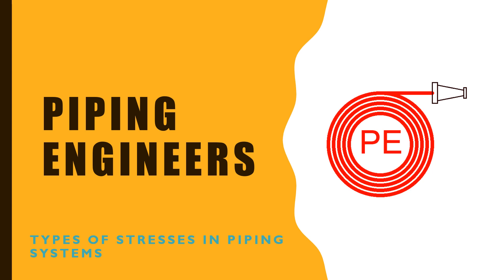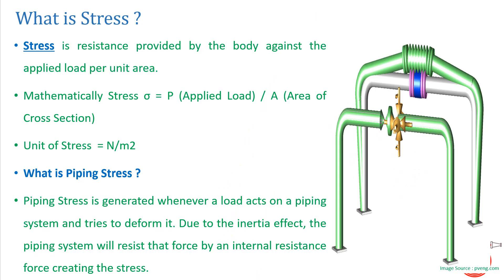Let's learn about the different types of stresses that act in the piping system. Stress is the resistance provided by the body against the applied load per unit area. Whether a tensile force or a compressive force is applied, the body provides resistance. Mathematically, stress is given by P upon A, where P is the applied load — compressive, tensile, or shear — and A is the area of cross section on which the load is applied.